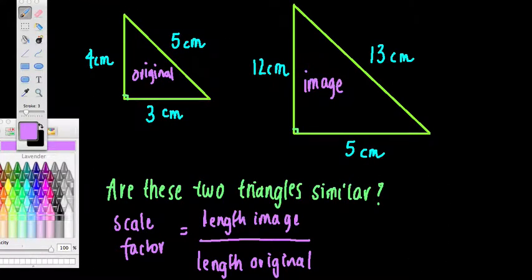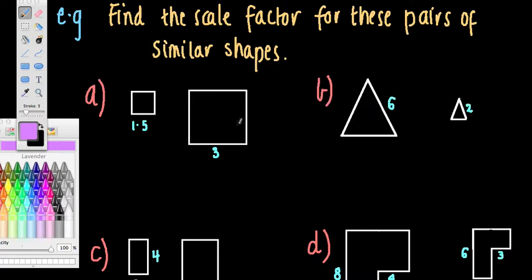Finally, what we can do is look at some examples of finding the scale factor. Now it says find the scale factor for these pairs of similar shapes. That's telling me that they are similar. This is different, very different to the last question, where we weren't told they were similar, we were checking if they were.